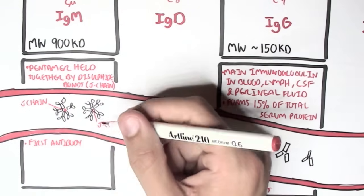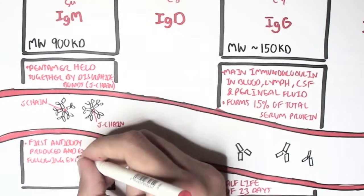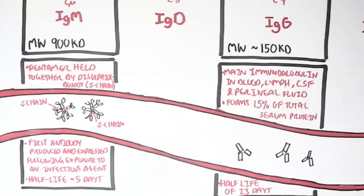Interestingly enough, IgM is the first antibody to be produced and expressed following exposure to an infectious agent. Whereas IgG was the most abundant, IgM is the first to be produced. And it has a relatively short half-life, about 5 days.